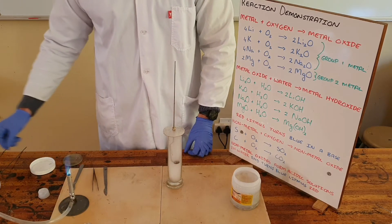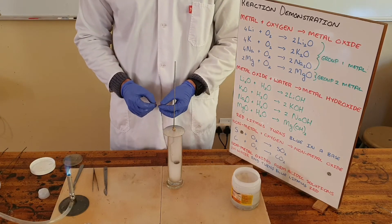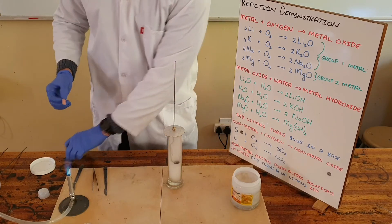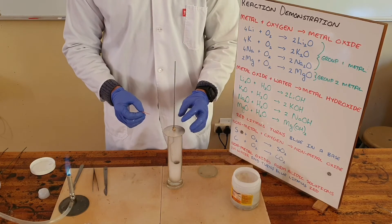This can be shown by adding a piece of red litmus paper, which we know turns blue in the presence of a basic solution.